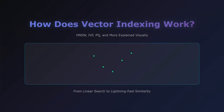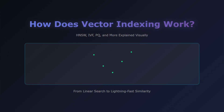Welcome back to the channel. Today we're diving deep into one of the most crucial topics in modern AI and search systems: vector indexing. If you've ever wondered how ChatGPT searches through millions of documents in milliseconds, or how Spotify finds songs similar to what you're listening to, you're about to find out. By the end of this video, you'll understand exactly how HNSW, IVF, PQ, and other indexing methods work, when to use each one, and see them in action with real code examples. Let's get started.